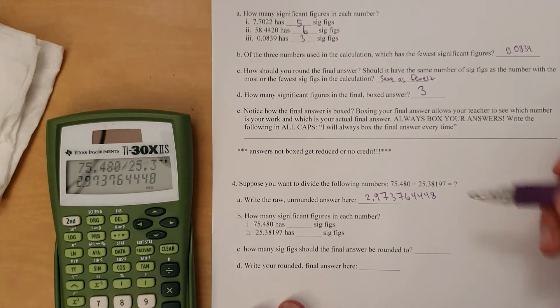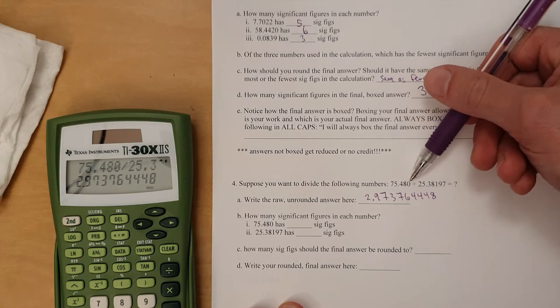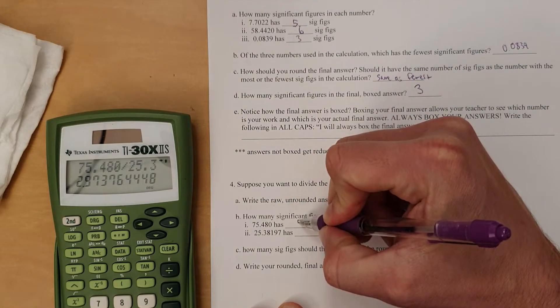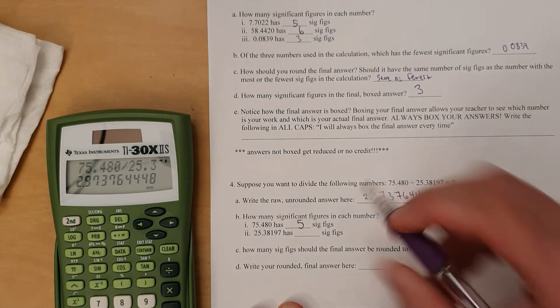How many significant figures in each number? So in order to know how to round that, you look at this, count 1, 2, 3, 4, 5 significant figures. And then you look at this number, and you count 1, 2, 3, 4, 5, 6, 7 significant figures.